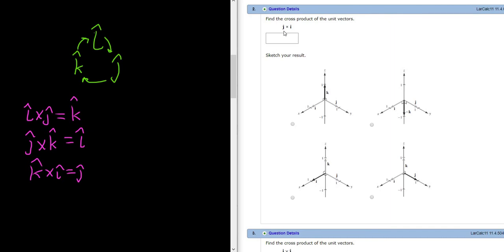However, this does not give us J hat cross I hat. So what you do is you go backwards. Whenever you go backwards, like if you're going from here to here, you write the result but put a negative sign. This will be negative K hat.